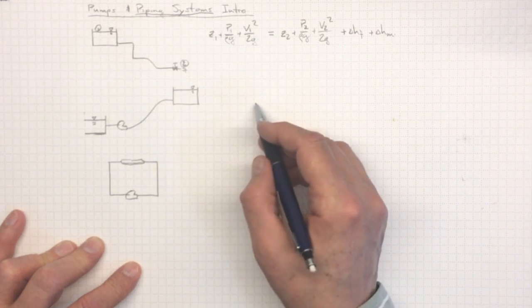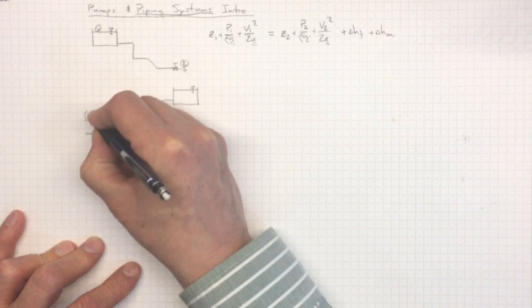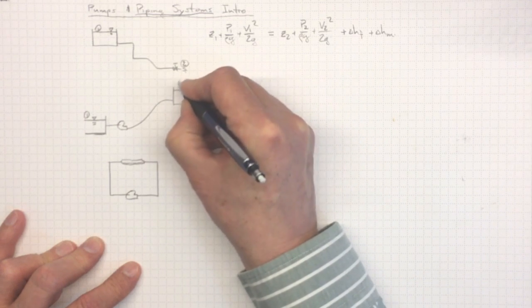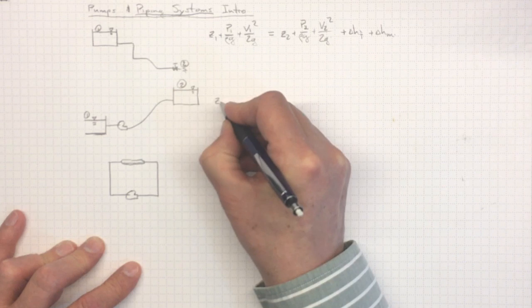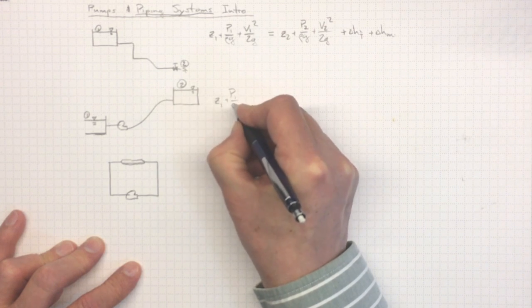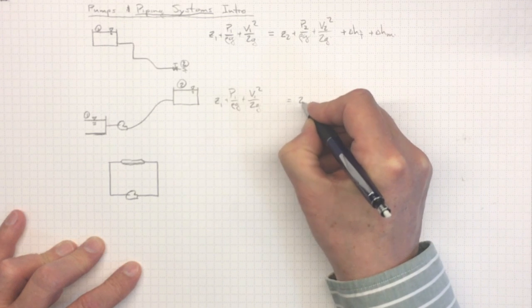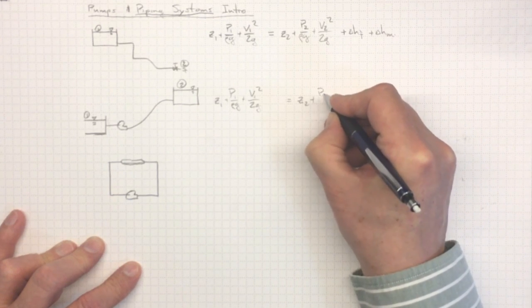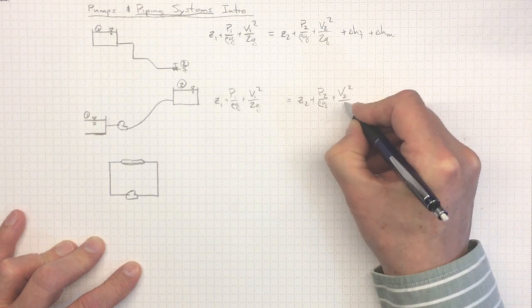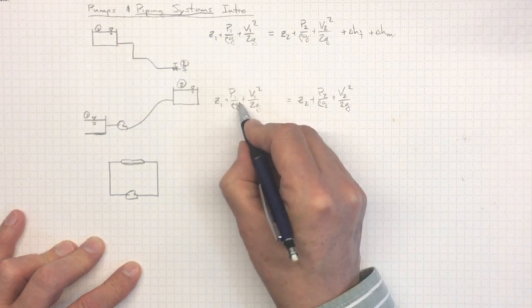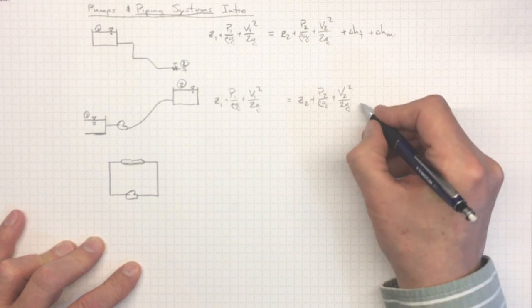Now, if we want to put a pump into that system, we'll have exactly the same situation. We'll still pick, carefully so that we can easily know what's going on, two locations one and two. Z1 plus P1 over rho g plus V1 squared over 2g equal to Z2 plus P2 over rho g plus V2 squared over 2g. What we had in energy at location one, we'll still have in energy at location two.